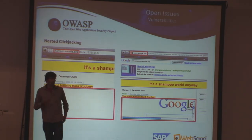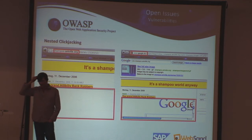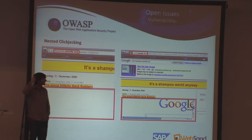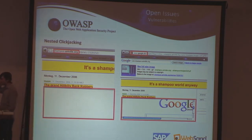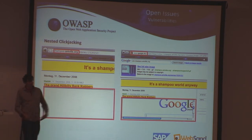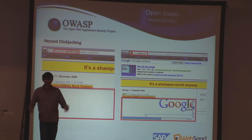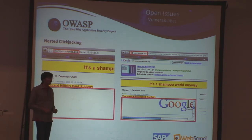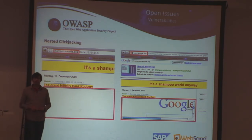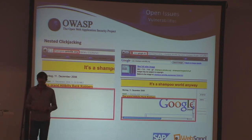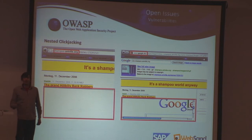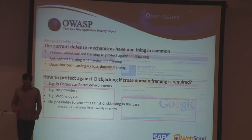This is a realistic attack scenario. Ad providers are a prime example: they show ads in iframes and render content they don't control themselves — anyone with enough money can place content in those iframes. These iframes are interactive, so when you click on an ad you might actually be clicking on a clickjacking attack.